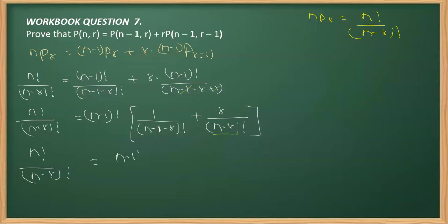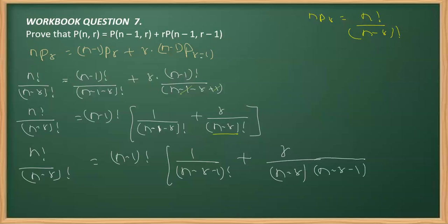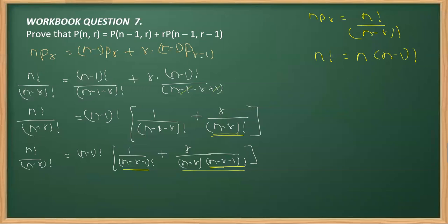Continuing: n! / (n-r)! is equal to (n-1) whole factorial. I can write the denominator terms as (n-r-1) and then (n-r) into (n-r-1) whole factorial. What I'm doing here is simply writing n factorial in its expanded form as n multiplied by (n-1) whole factorial. As you can see, (n-r-1) is common, so we can take this common from the denominator.